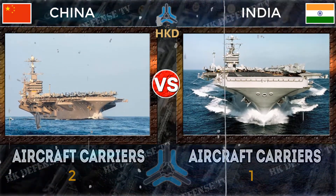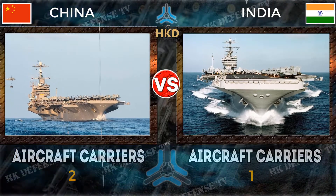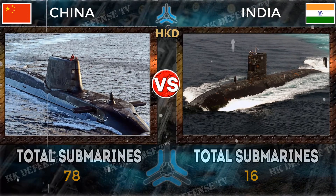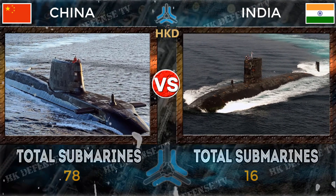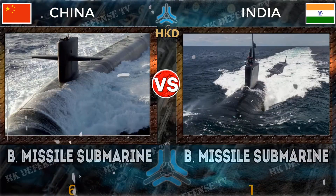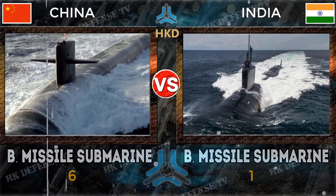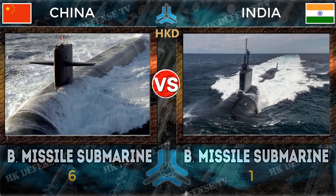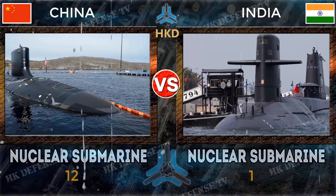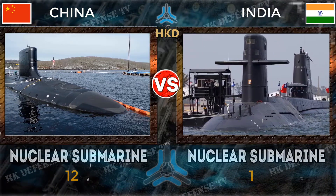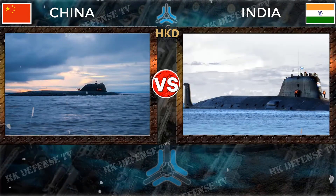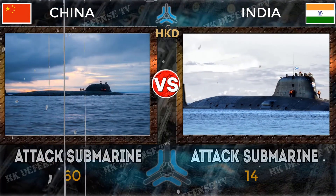Aircraft carriers: China 2 and India 1. Submarines — China 78 and India 16 total. Ballistic missile submarines: China 6 and India 1. Nuclear attack submarines: China 12 and India 1. Attack submarines: China 60 and India 40.